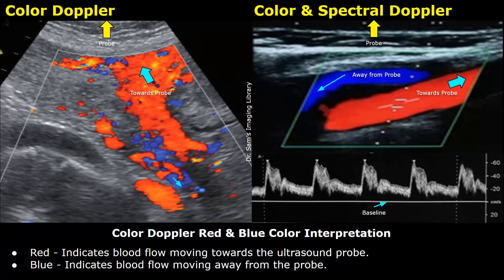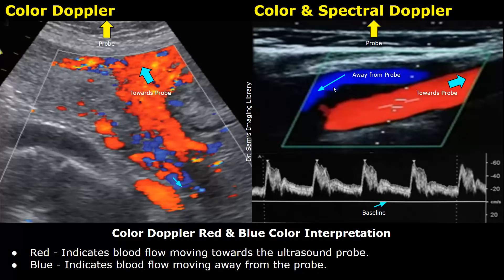Hello everyone, this is Dr. Sam, and today we will learn the interpretation of red and blue colors on color Doppler ultrasound. When you apply color Doppler, you will notice two distinct colors — red and blue — inside the blood vessels.